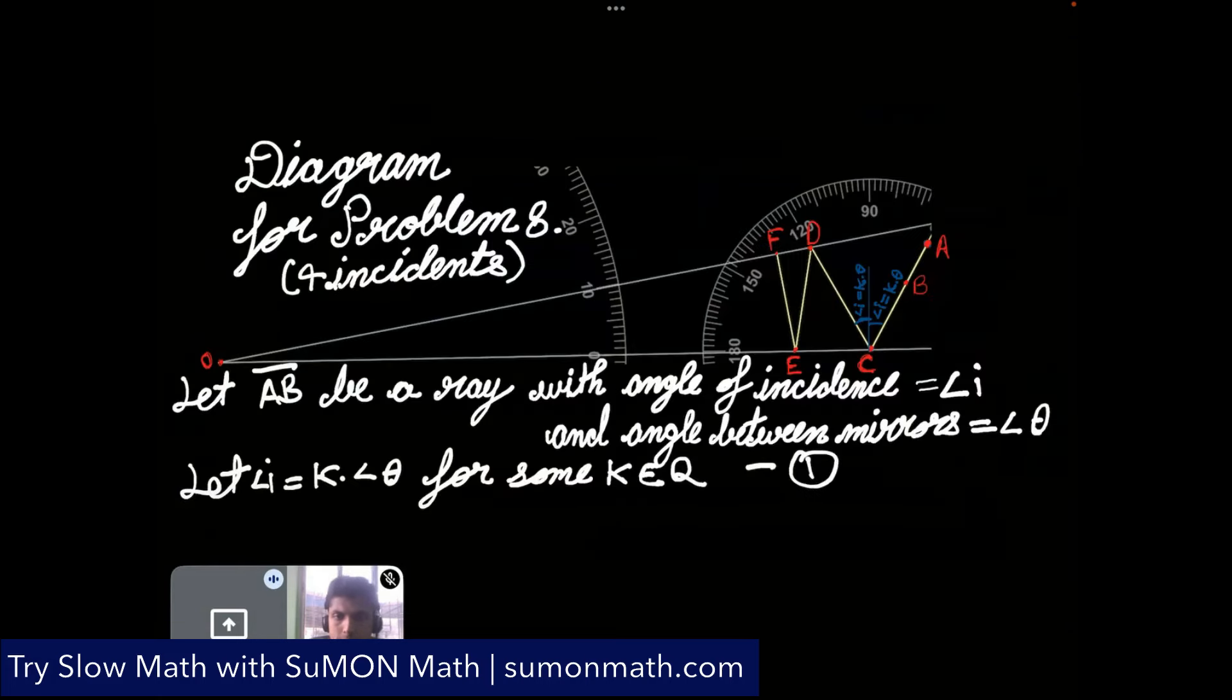So this is the diagram. We have two plane mirrors. The common vertex is O and the light ray is AB and the angle of incidence is i. Angle between the two mirrors is theta. So let's say that i is equal to k theta for some k in rational number and this k is the ratio between i and theta.